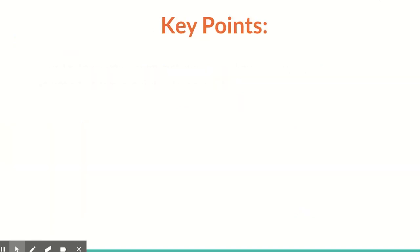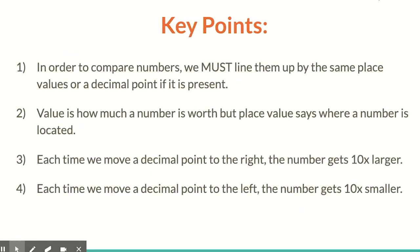Let's go over those key points again. One: in order to compare numbers, we must line them up by the same place values, or a decimal point if present. Two: value is how much a number is worth, but place value is where a number is located. Three: each time we move a decimal point to the right, the number gets 10 times larger. And four: each time we move a decimal point to the left, the number gets 10 times smaller. Try out the sample problems and see what you're able to do. You can always come back and look at this lesson — best of luck.